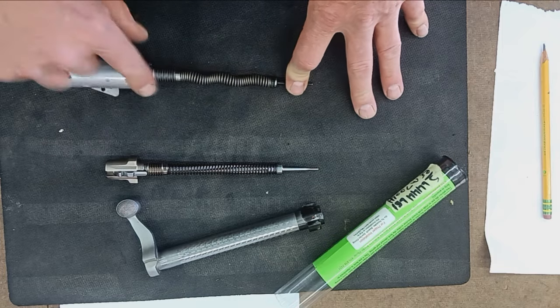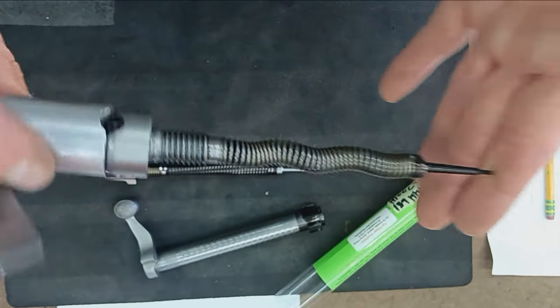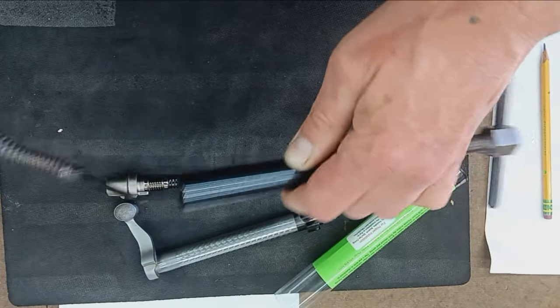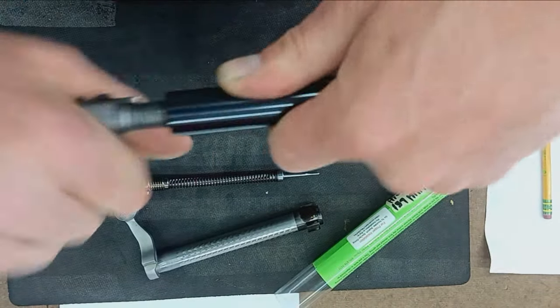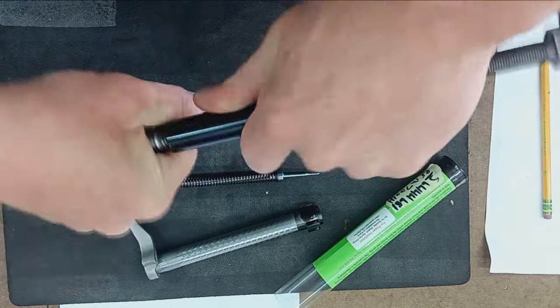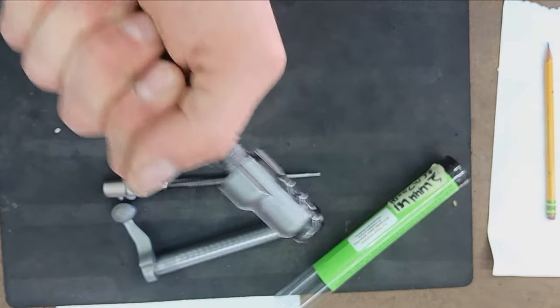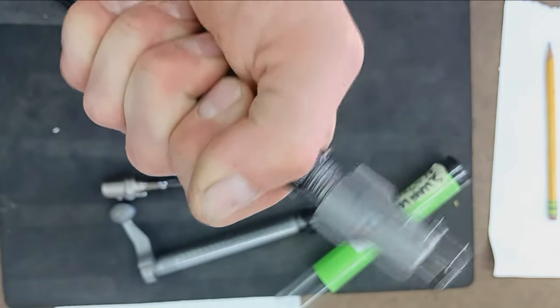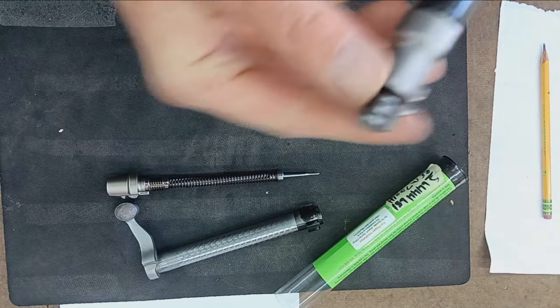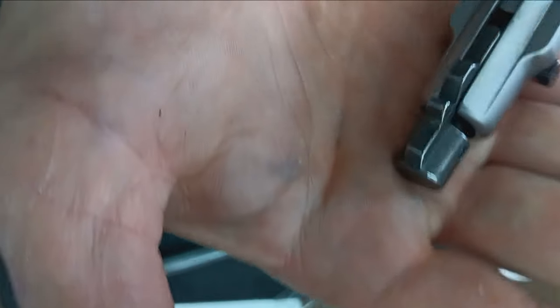Clearly this is no bueno. I've just got another disassembly tool here which will allow me to push the firing pin forward to get the retaining pin out and then show you what the J-lock system looks like here.